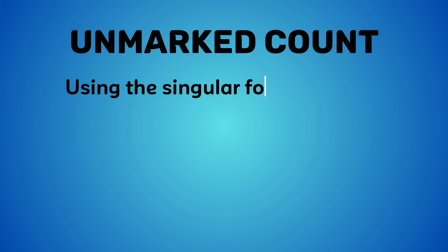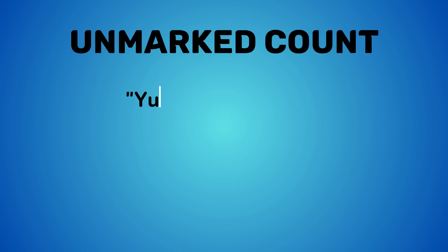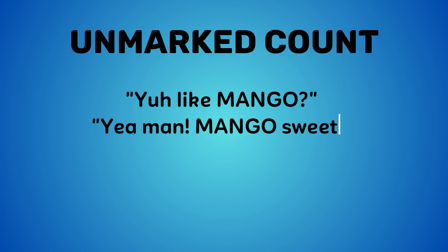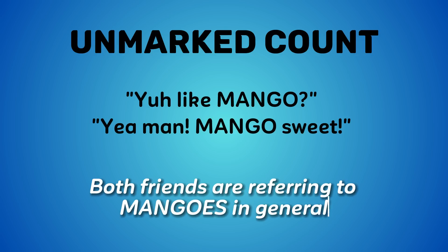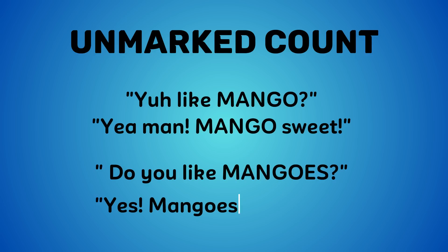Next, unmarked nouns. We use a singular version of nouns to indicate their plural. For example, a Jamaican who has never tasted a mango before may ask a friend about it. Both friends are referring to mangoes in general, not a specific mango. But still, they use the singular 'mango' instead of saying 'Do you like mangoes? Yes, mangoes are sweet.'